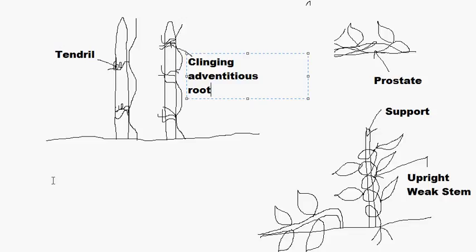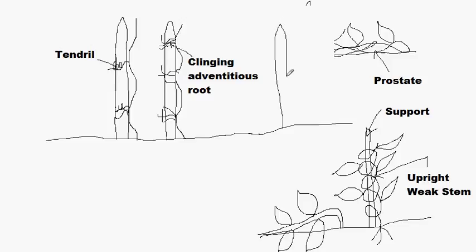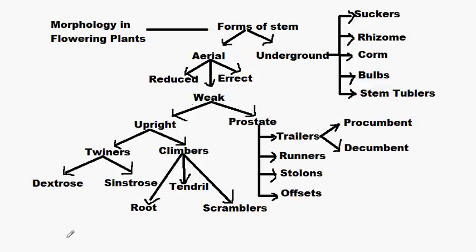The last type of climber is the scrambler. Scramblers use neither stem modification like tendrils nor clinging adventitious roots to attach to the support. Instead, they use thorns to pierce the support and get attached to it. Thorns can have many functions: they help protect a plant from predators, help prevent water loss, and as seen here, also help a climber to attach to a support.